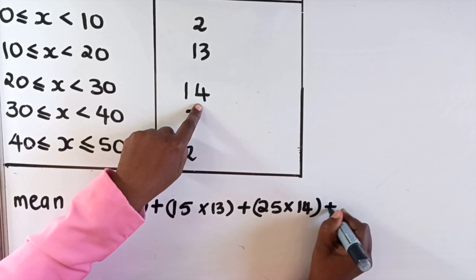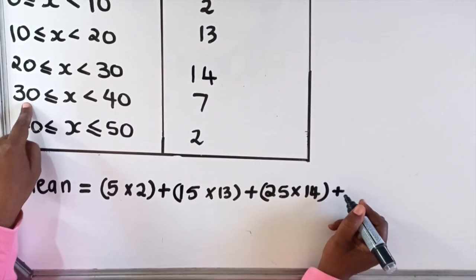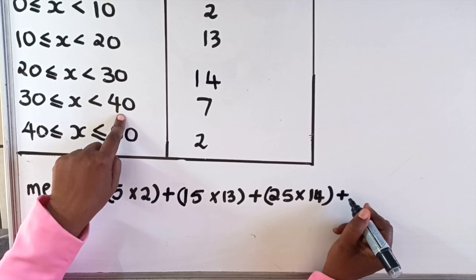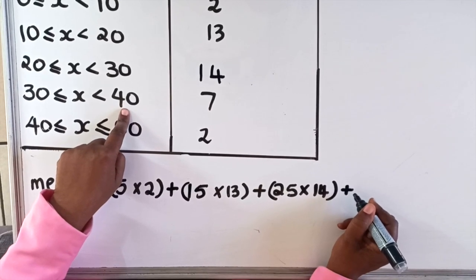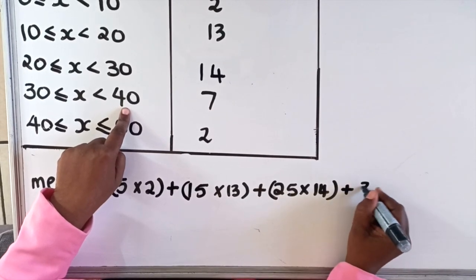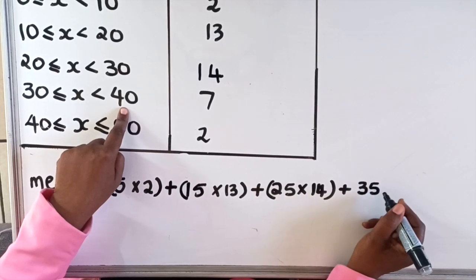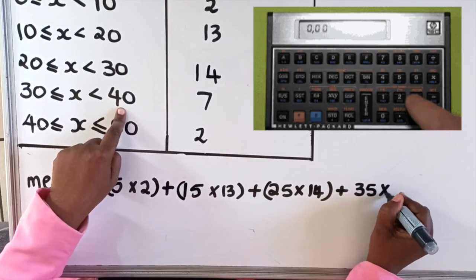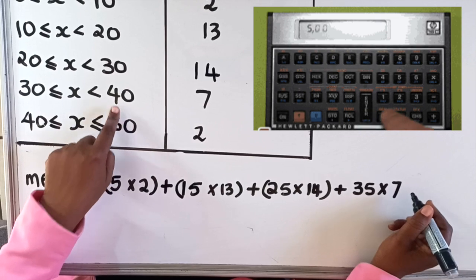Then add the next: 30 plus 40 is 70, 70 divided by 2 is 35. Please use your calculator when you're in an exam - you have lots of stress and make unnecessary mistakes. I'm not writing an exam, that's why I'm not using a calculator.